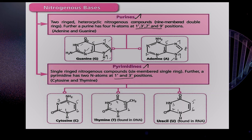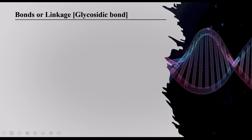So nitrogen bases are of two types: purines and pyrimidines. Purines consist of guanine and adenine; pyrimidines consist of cytosine, thymine, and uracil. Instead of thymine, uracil is present in RNA. Coming to the bonds — also called linkages — first we are going to see about the glycosidic bond.